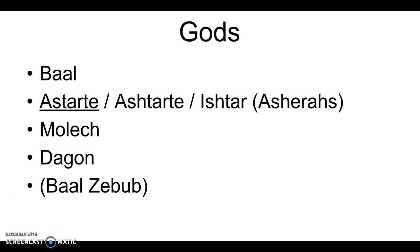Moloch was a war god worshiped by one of the Canaanite groups. As far as we can tell, worship of Moloch involved the sacrifice of little children — specifically boys. If you really wanted to show Moloch your dedication, you would sacrifice your own son, even a firstborn son, and then Moloch would bring you victory in battle. Moloch is mentioned in the Bible in relation to people worshiping him, and even Israelites sacrificing their children by fire to Moloch.